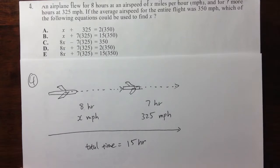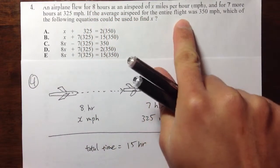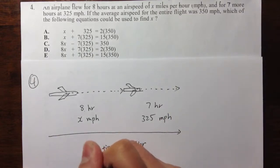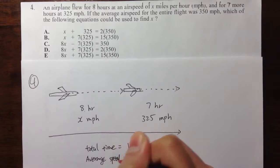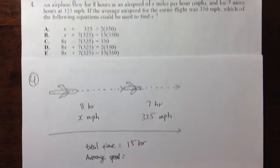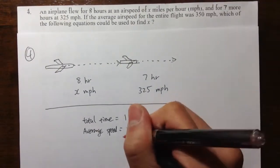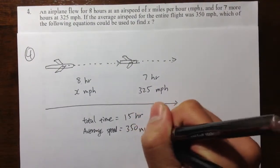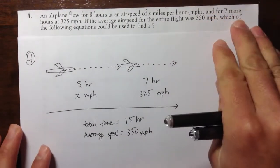And it says that the average airspeed of the entire trip was 350. So I'll write down average speed is equal to 350 miles per hour. So here we have 350. And then we just bring this up a little bit. 350 miles per hour. So with these pictures, this illustrates what's going on in the question.